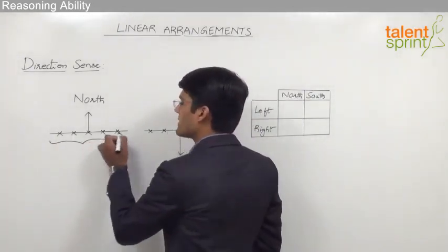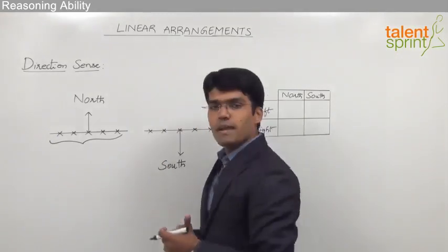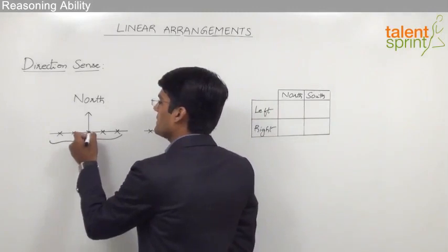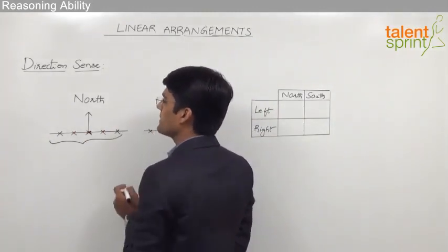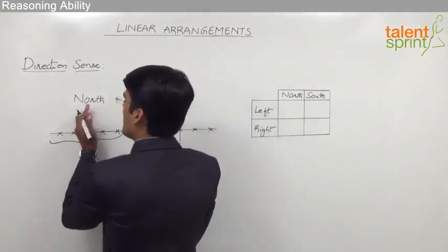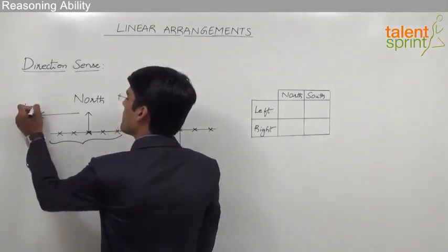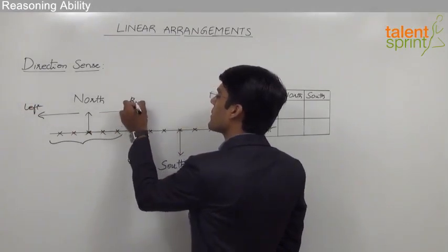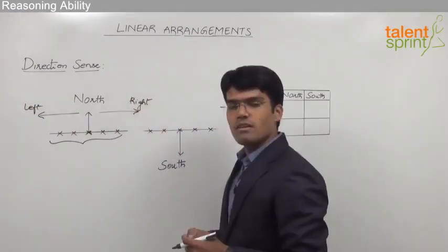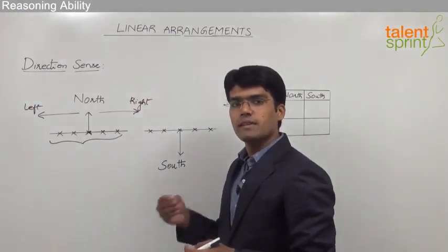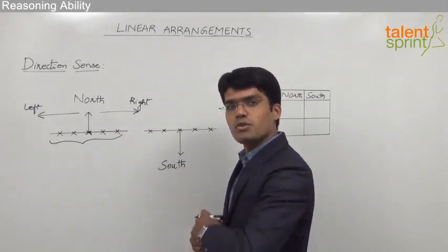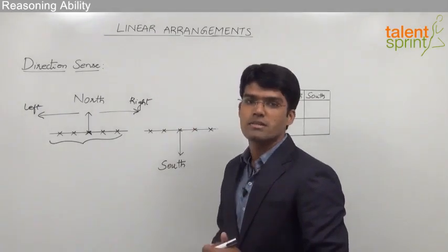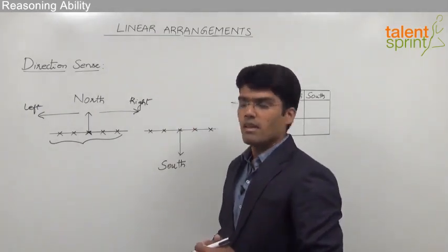Let us assume these are five persons sitting in a row where all of them are facing north. If we take the position of one of these persons who is facing north, we can understand that the left of this person will be towards our left on the paper and the right of this person will be towards our right on paper. So remember, whenever a person is facing north, left of that person should be taken towards our left on paper and the right towards our right on paper.